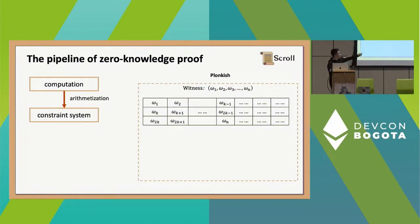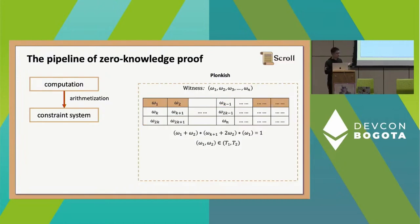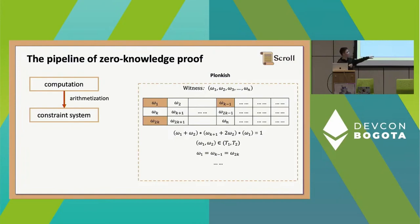Another commonly used optimization is called Plonkish organization. Instead of laying out your witness as a vector, you lay it out in a table — for example with three rows. You can define something more flexible, like degree-3 constraints where you access some cells and define specialized custom gates or custom constraints. You can also define membership relationships, for example proving that a tuple belongs to two columns in the table, which makes range proofs very efficient.